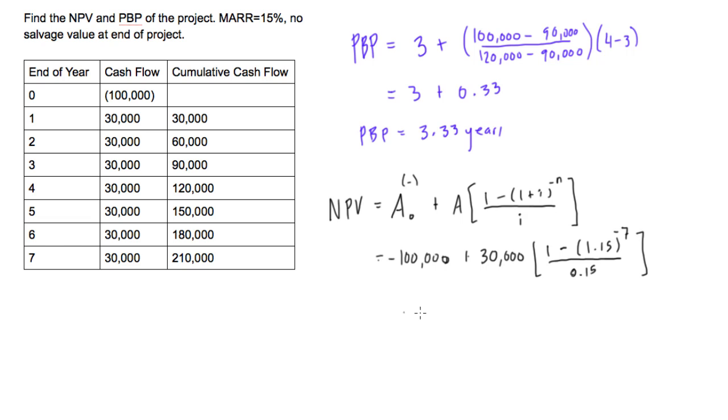And this is all over 0.15. We can do one more step, actually. We'll say this is negative $100,000. Calculating this last term on your calculator, this will give you $124,812.89.